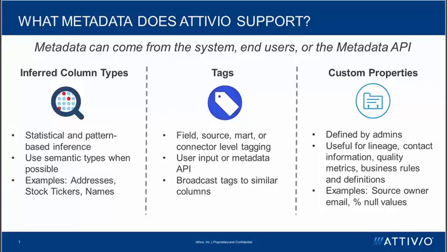There are also custom properties that can be defined within the catalog. Custom properties are defined by catalog administrators and can be defined at four different levels: marts, sources, fields, and connectors. They're useful for a wide array of purposes. Some use cases require tracking lineage, while other administrators might want to enable providing contact information to a data source owner. You can also use custom properties to provide data quality metrics and descriptions of relevant business rules or business definitions. An example would be setting up custom properties for the source owner, the source owner's email, and also the percent of null values contained within a given column.